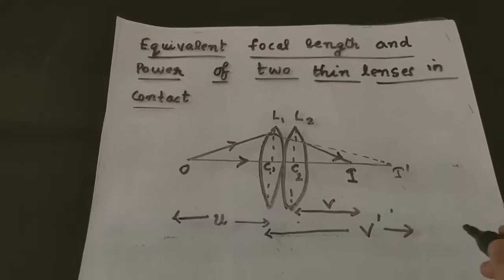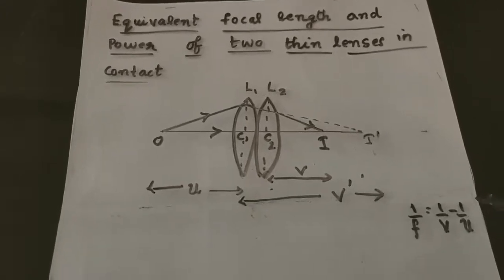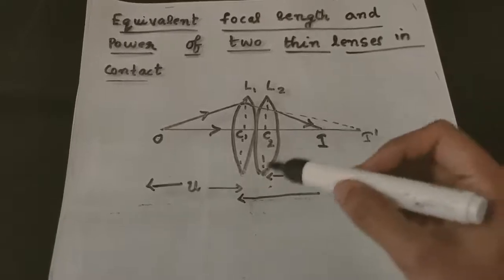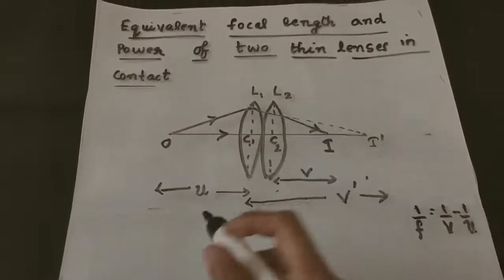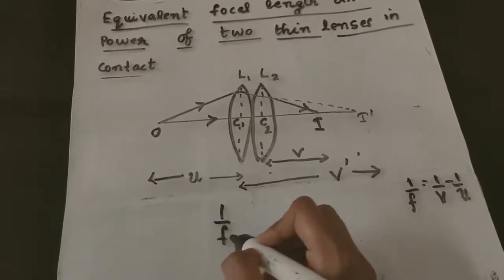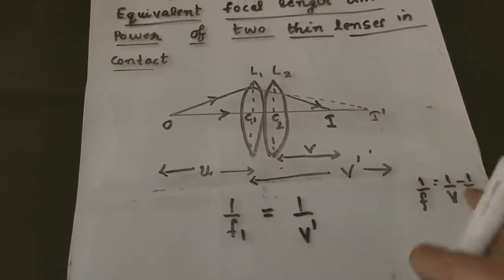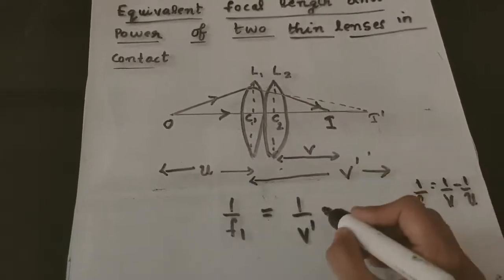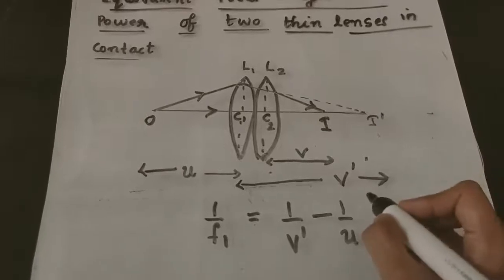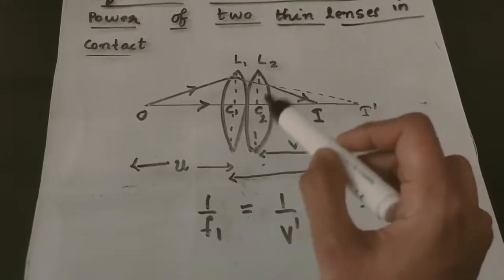So for the first lens we can write the thin lens formula: 1/F = 1/V − 1/U, where F is focal length, V is image distance, and U is object distance. For the first lens L1, the equation is: 1/F1 = 1/V' − 1/U. Let us take this as equation number 1.